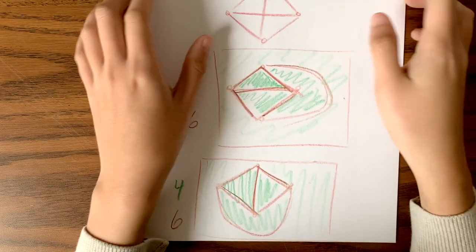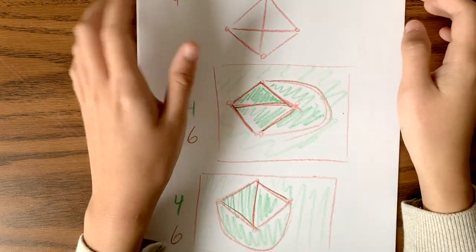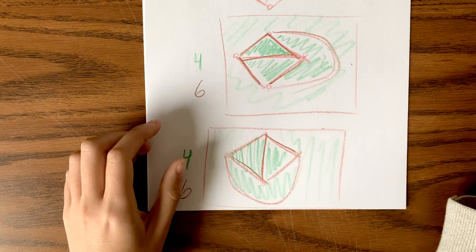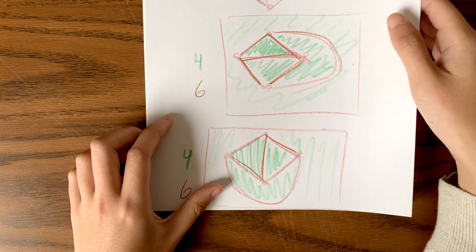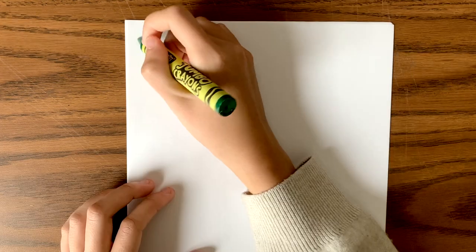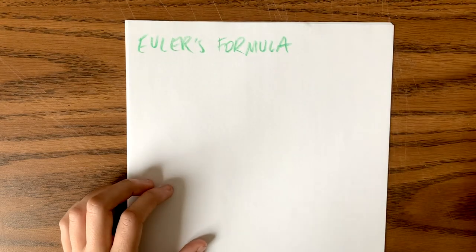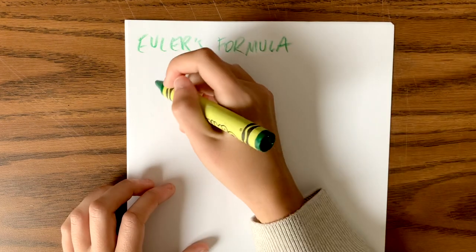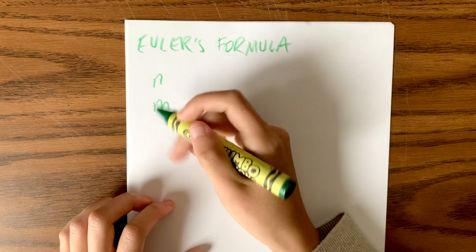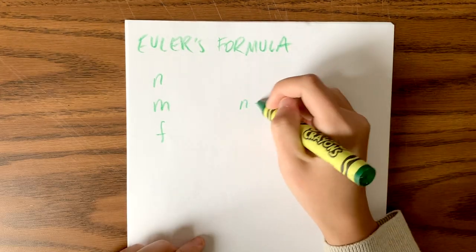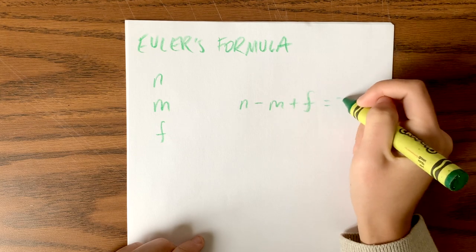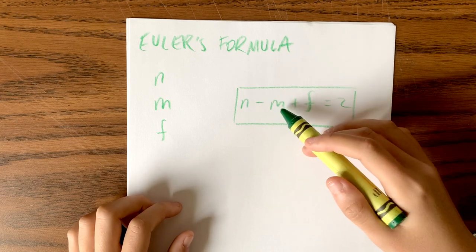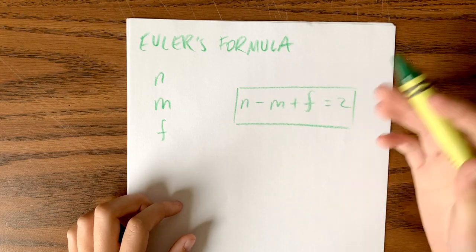Is there some kind of relationship between the number of faces, the number of vertices, and the number of edges in a planar graph? There is a cool formula for that — Euler's formula. Euler's formula says that if G is a connected planar graph with n vertices, m edges, and f faces, then n minus m plus f equals 2. This relates the number of vertices, edges, and faces in a connected planar graph.